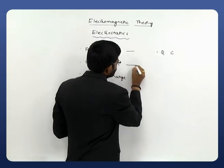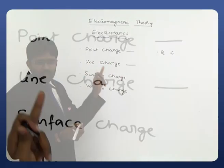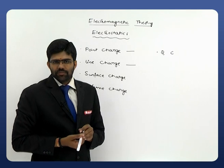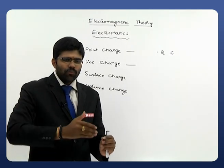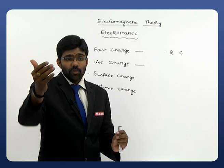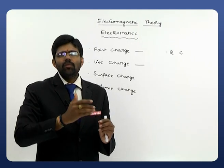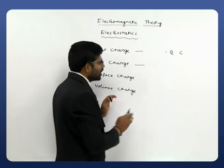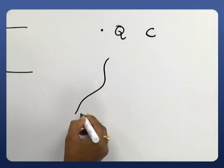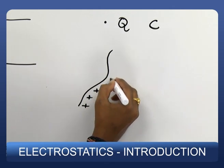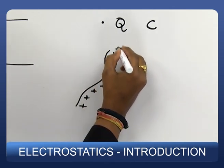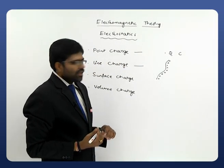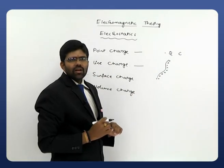Next, let's look at the line charge. The name itself indicates a charge which is distributed on a line. Whenever we have a charge that is uniformly distributed over a line, irrespective of the shape of that line, it is said to be a line charge. Here, considering positive charge distributed uniformly along the line — this particular type of charge is said to be a line charge.